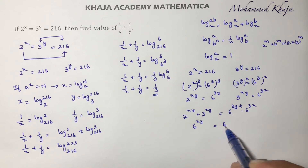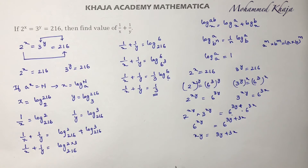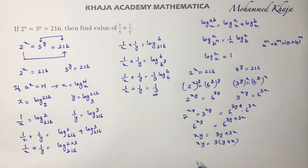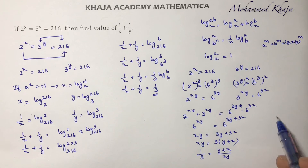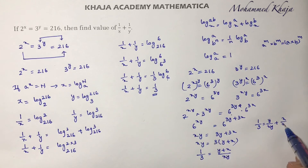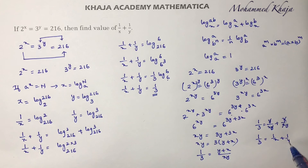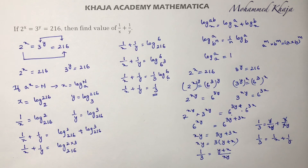So 6 power xy equals 6 power 3y into 6 power 3x. Since bases are equal, equate the powers: xy equals 3y plus 3x. Taking 3 common, xy equals 3 times (x plus y). Transposing: 1 by 3 equals (x plus y) divided by xy. Splitting the term: 1 by 3 equals y by xy plus x by xy, which gives 1 by 3 equals 1 by x plus 1 by y.